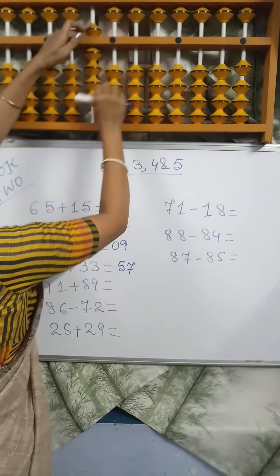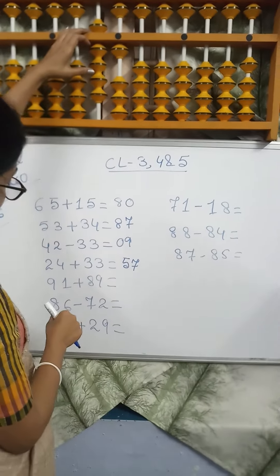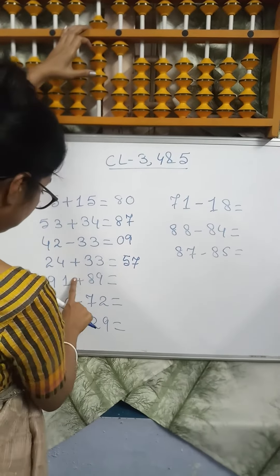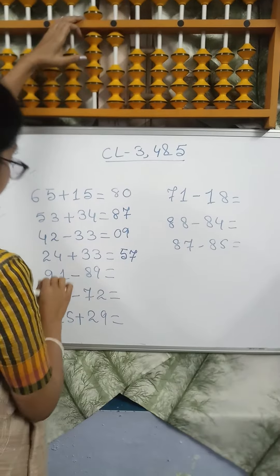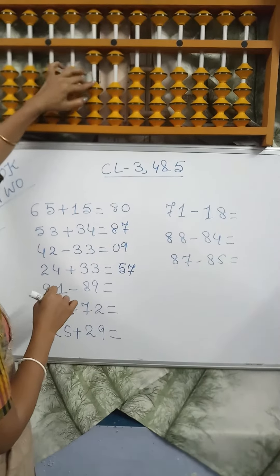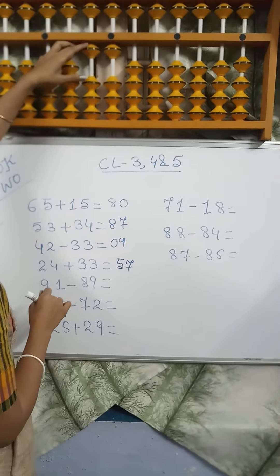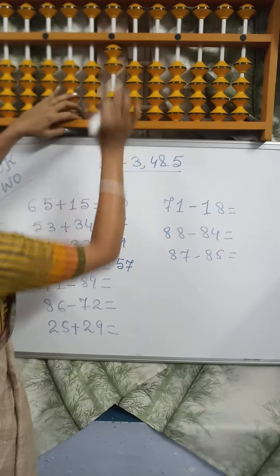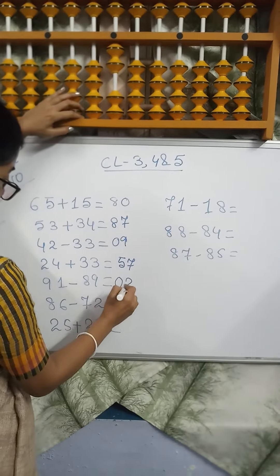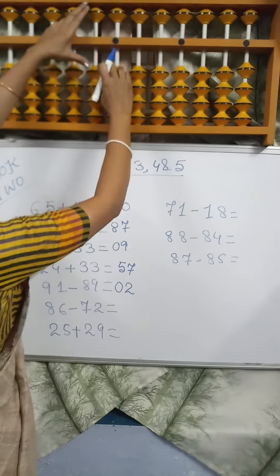91 minus 89. Minus 80 minus 9. 4 minus 9, minus 10 plus 1. Answer is 02. Next sum.